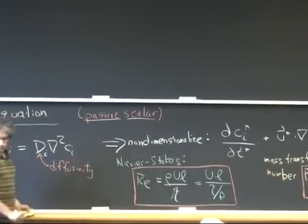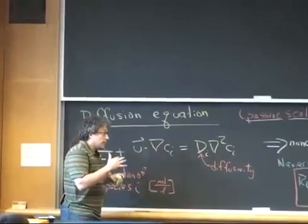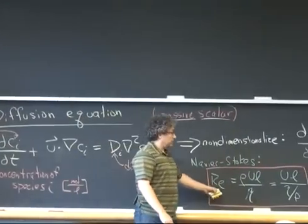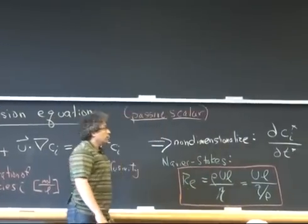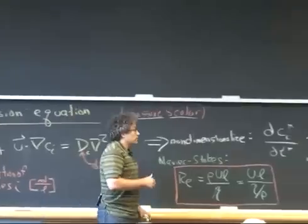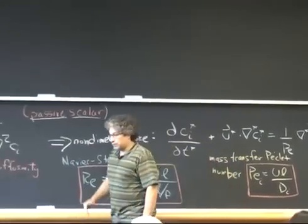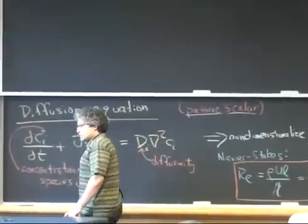A momentum diffusivity. So if we have a strictly fluid mechanical problem, it's governed by the Reynolds number. If we also have mass transport, that mass transport is described by the Peclet number, and in fact for every species we have, there is another Peclet number that describes the transport of those species.